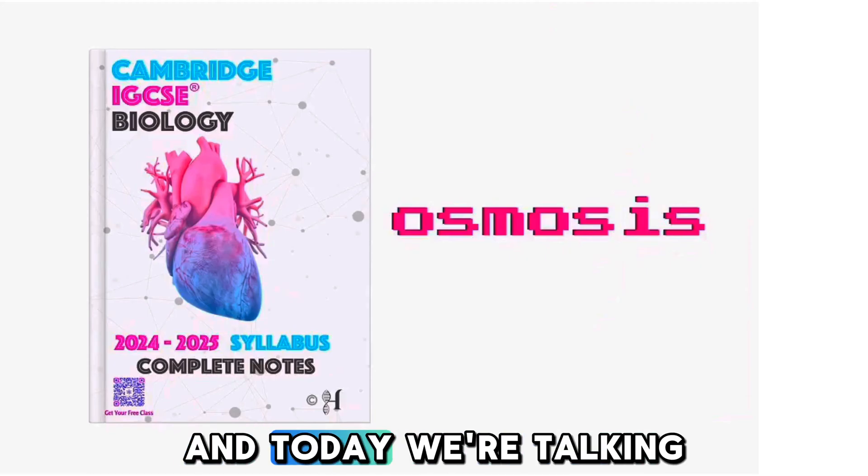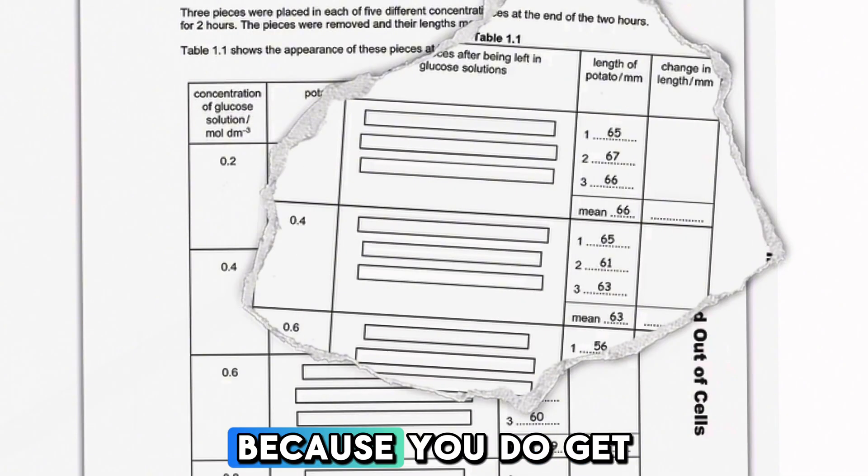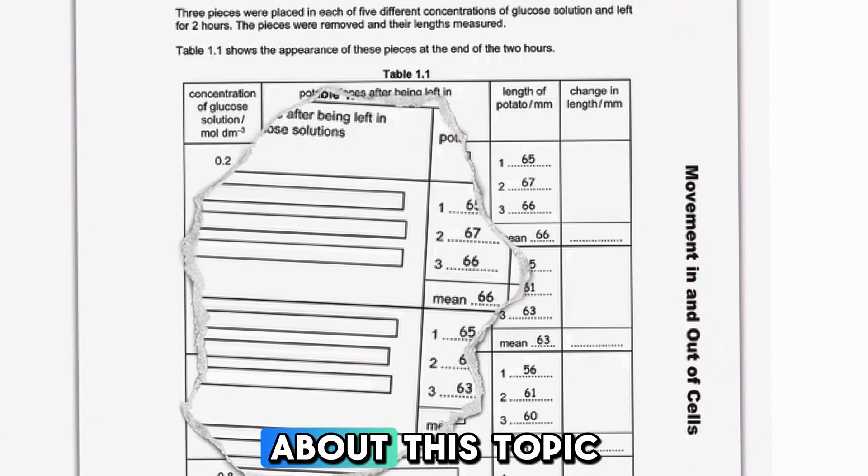This is IGCSE Biology and today we're talking about osmosis. Osmosis is one of the important topics because you do get a lot of paper 6 practical questions asking you about this topic.